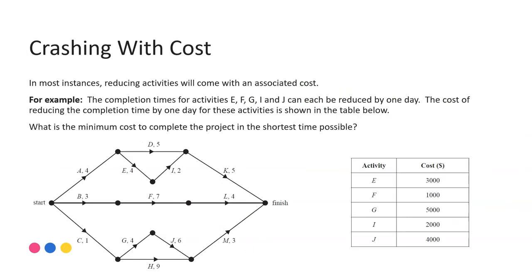Crashing with cost is where this notion of only reducing what's absolutely required comes heavily into play. So this example, I have a project network here and the completion times for activities E, F, G, I and J can all be reduced by one day. The cost of reducing the completion time by one day for these activities is shown in the table below. The reason why reductions might have a cost associated is usually in order to get that particular activity or job done within the project, there needs to be expenditure. Maybe more workers are brought in so that it can be completed faster or maybe more expensive resources. So it is usually about trying to save money or spend the minimum amount required in order to achieve the greatest saving overall.